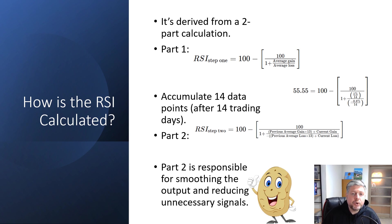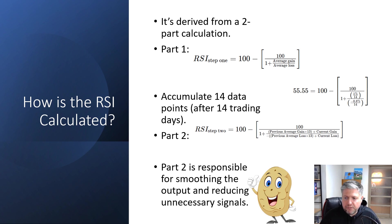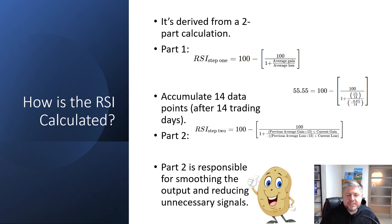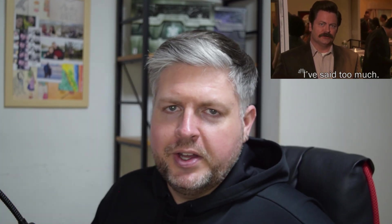How is the RSI calculated? It uses a two-factor formula. Part one takes into account the average gain and the average loss. Part two averages those averages to smoothen the line. If you're really interested you can pause the video and look at the formulas yourself, but the key point is that it is two parts and there is an effort made to smoothen the line.